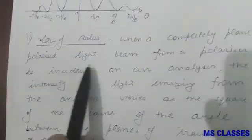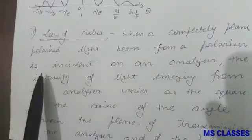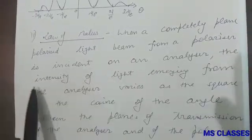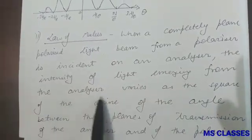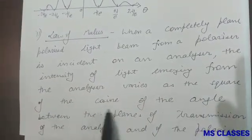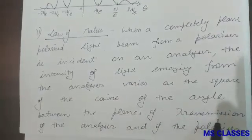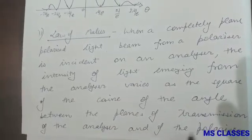Second, state the law of Malus. So when a completely plane polarized beam from a polarizer is incident on an analyzer, the intensity of light emerging from the analyzer varies as the square of the cosine of the angle between the plane of transmission of the analyzer and of the polarizer.